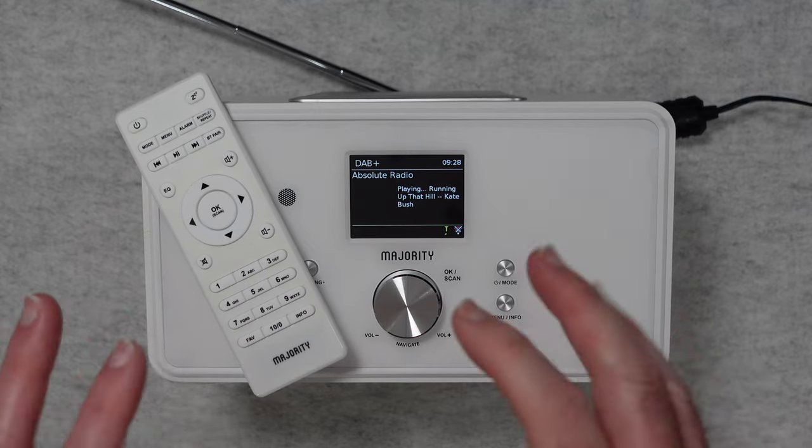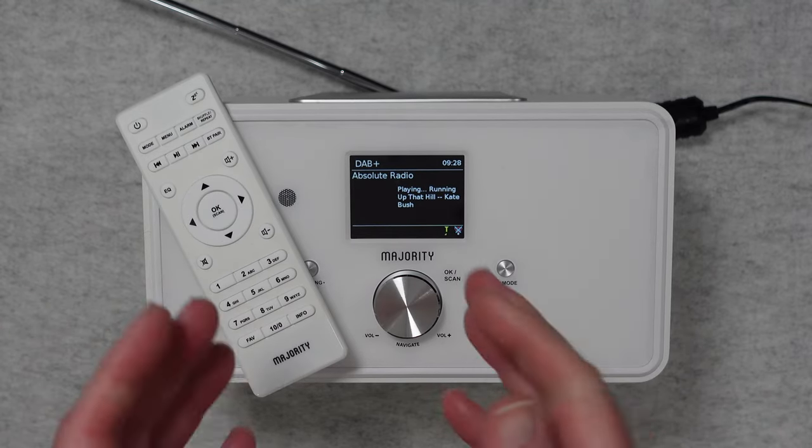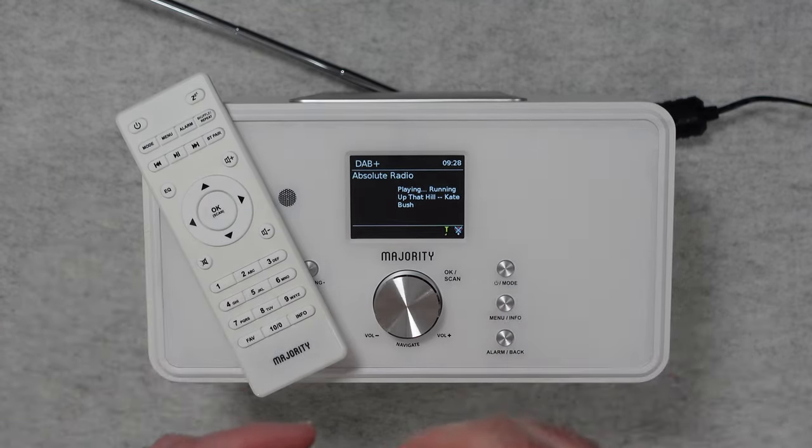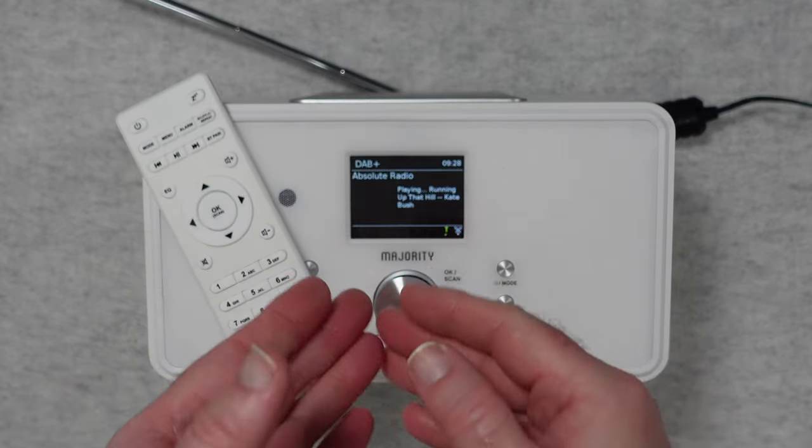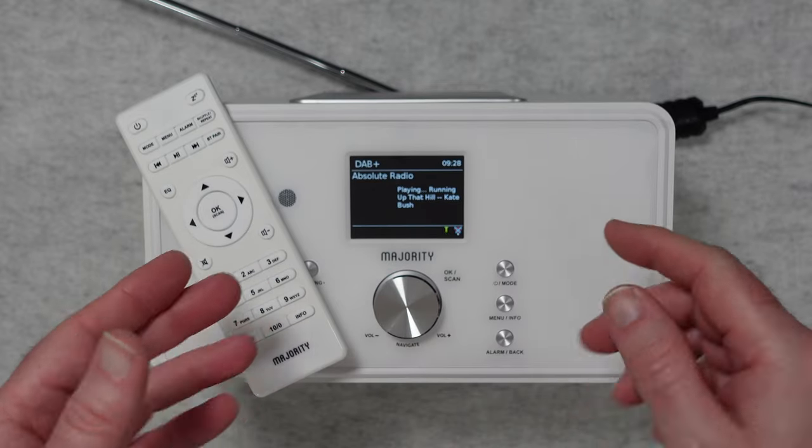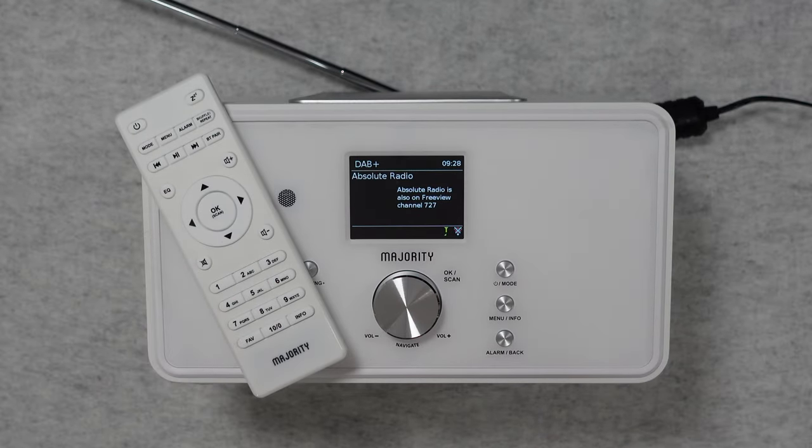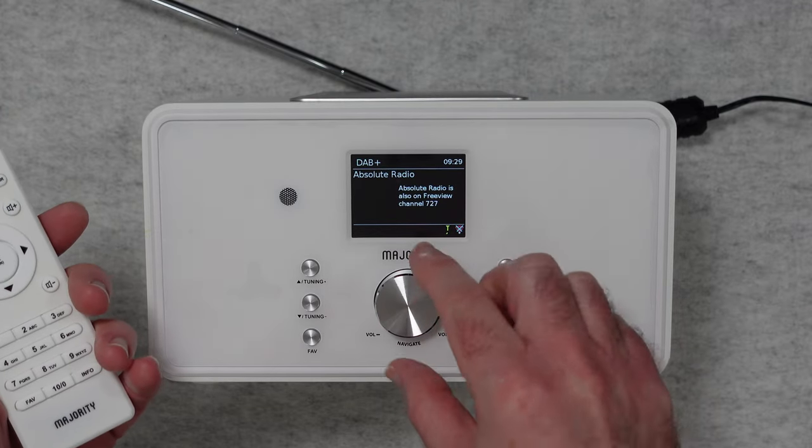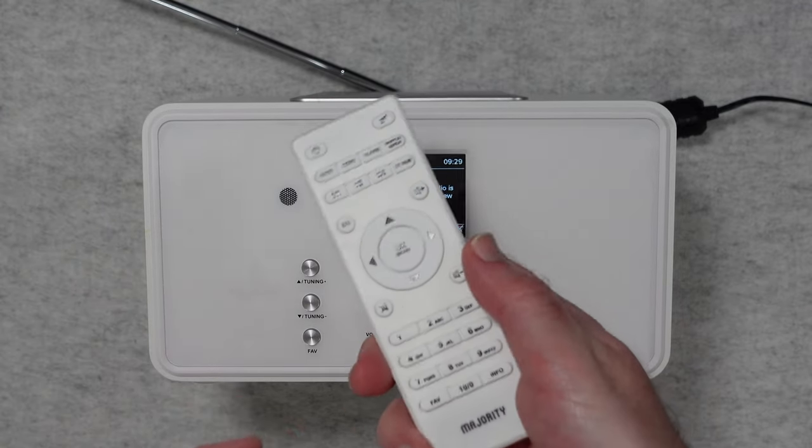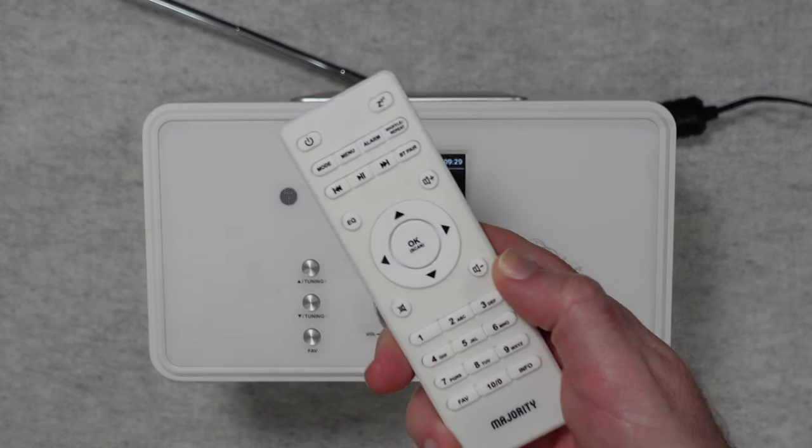So we've now got the majority barred up and running. It runs through a setup wizard on first startup where you connect it to your Wi-Fi network. And you can also do obviously a station scan for the DAB radio stations. Now I can control this via the buttons and the control on the front. But for this demonstration I will be using the remote control.